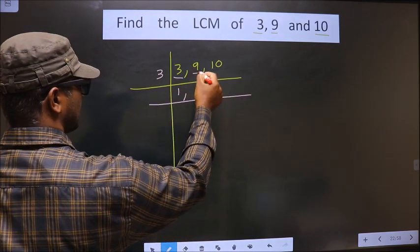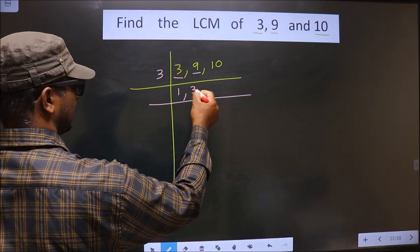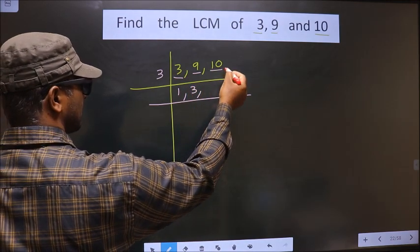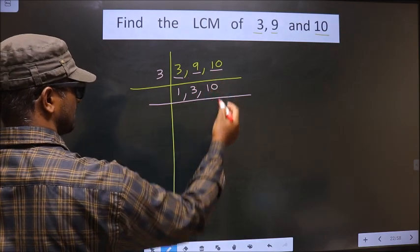3. Now next number is 9. When do we get 9 in 3 table? 3 times 3 is 9. Next number is 10. 10 is not divisible by 3. So you write down 10 as it is.